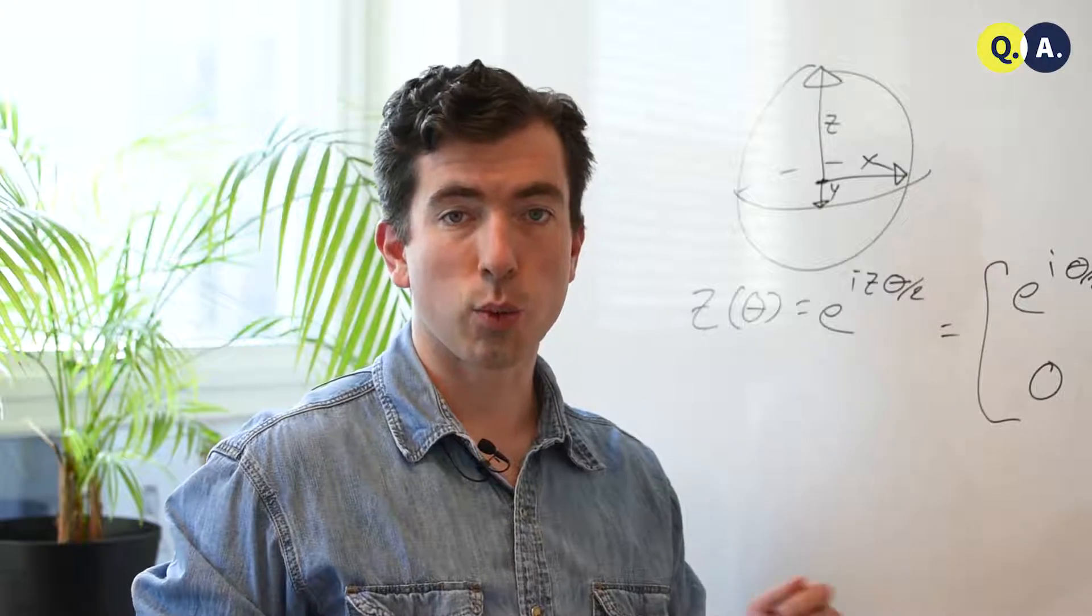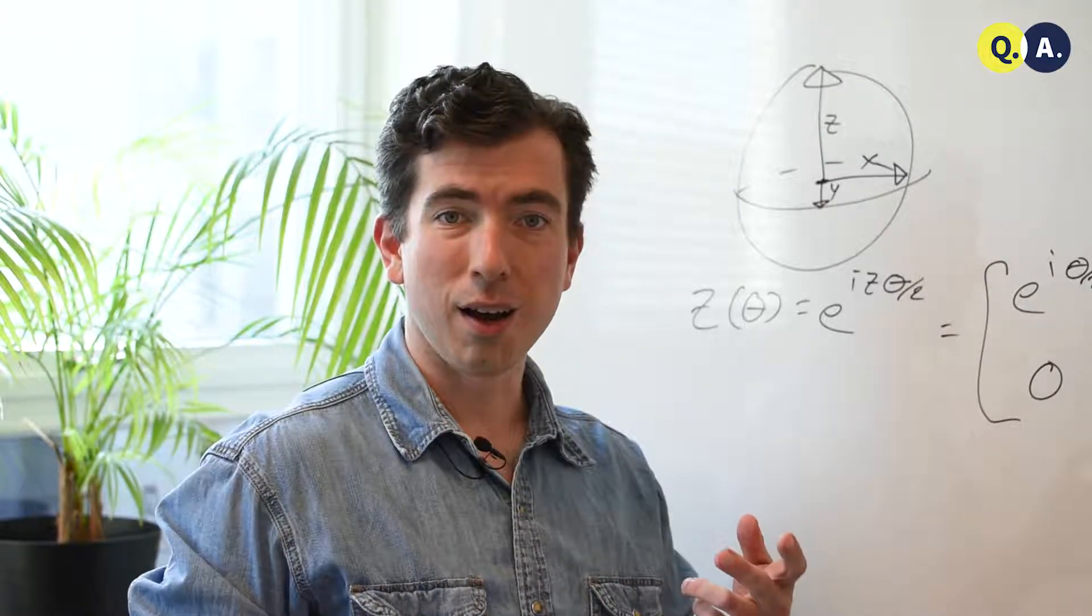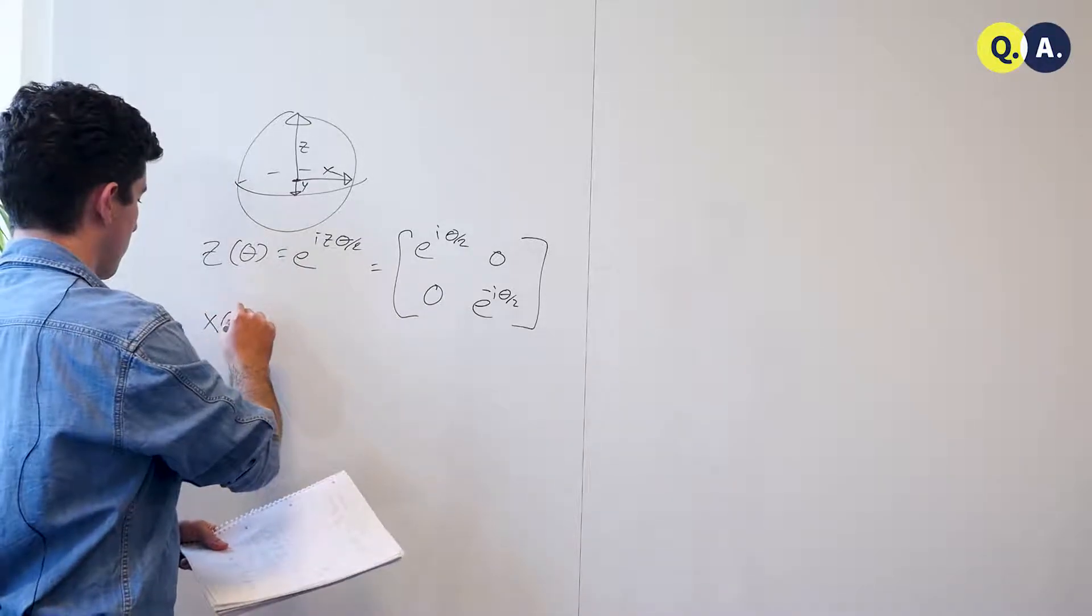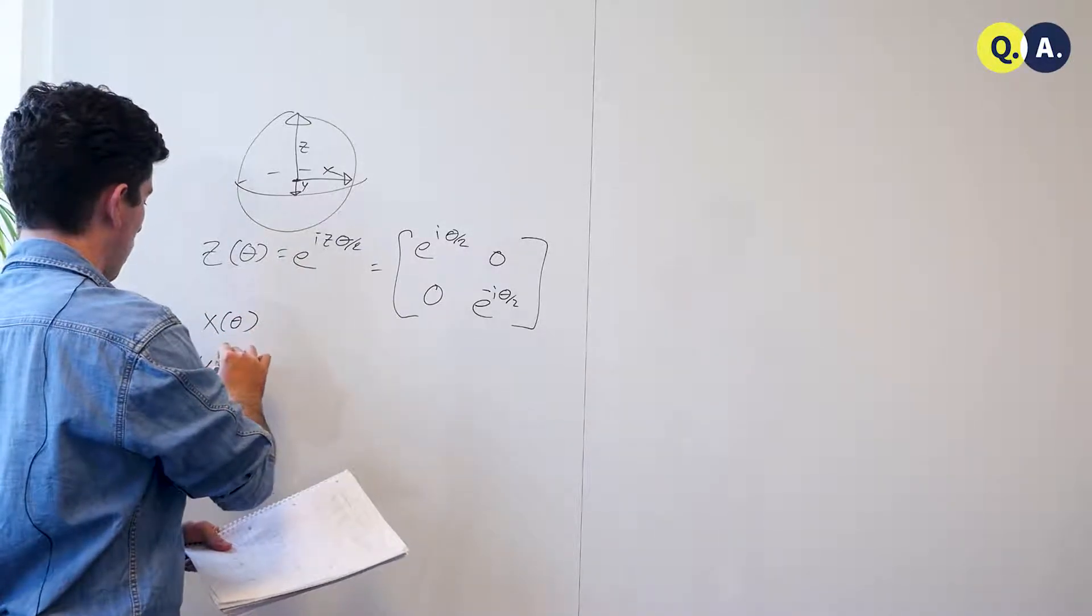Now, we can see immediately that x and y-rotations on their own aren't going to give us this z-rotation. So, we can write out x theta and y theta, which are just rotations around these axes by angles plus theta.